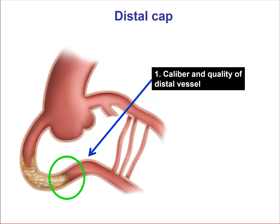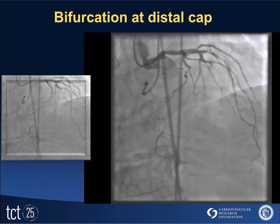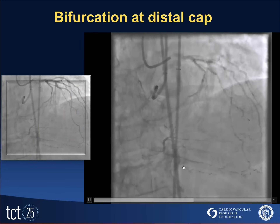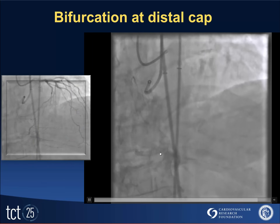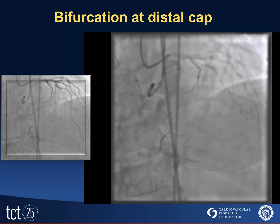For the distal cap, we look at the caliber and quality of the distal vessel. We look at the presence of bifurcations that might result in side branch closure if we go sub-intimally and then re-enter. Finally, we look at any bypass graft and anastomosis sites that might complicate the wire course distally. This is an example of a right coronary artery CTO with reconstitution of the vessel happening at the distal bifurcation of the PDA and the posterior lateral vessel.